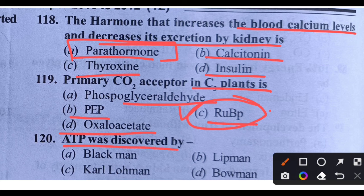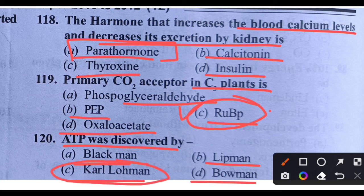Question 120 — Last question: ATP was discovered by whom? Options: Blackman, Lipman, Karl Lohman, or another option. Right answer is Option C — Karl Lohman discovered ATP.